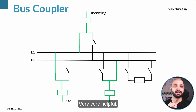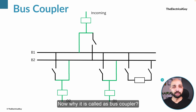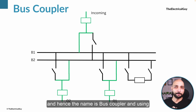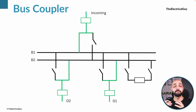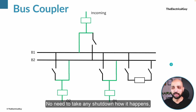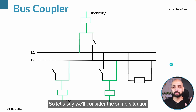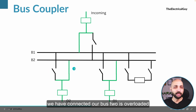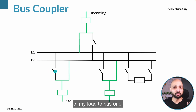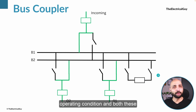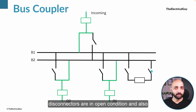Now let's get back to the bus coupler. As the name suggests, it couples the two buses — hence the name bus coupler. Using this we can transfer load from one bus to another in live condition with no need to take any shutdown. Let's consider the same situation: bus two is overloaded and I want to transfer some load to bus one. In normal operating condition, both disconnectors of the bus coupler and the circuit breaker are in the open condition.